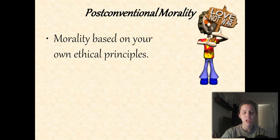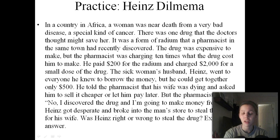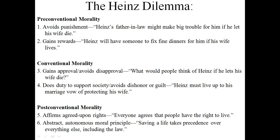Kohlberg came up with these three stages based on a scenario called the Heinz Dilemma, which is really famous. After asking many people what they would do in this situation, he developed these three stages. Now pause the video, read the Heinz Dilemma, go through the six characteristics of the three stages we just talked about, and see if you can come up with a response that fits each characteristic. Here are some potential answers — check them against what you wrote. If you don't understand, bring your questions to class tomorrow.